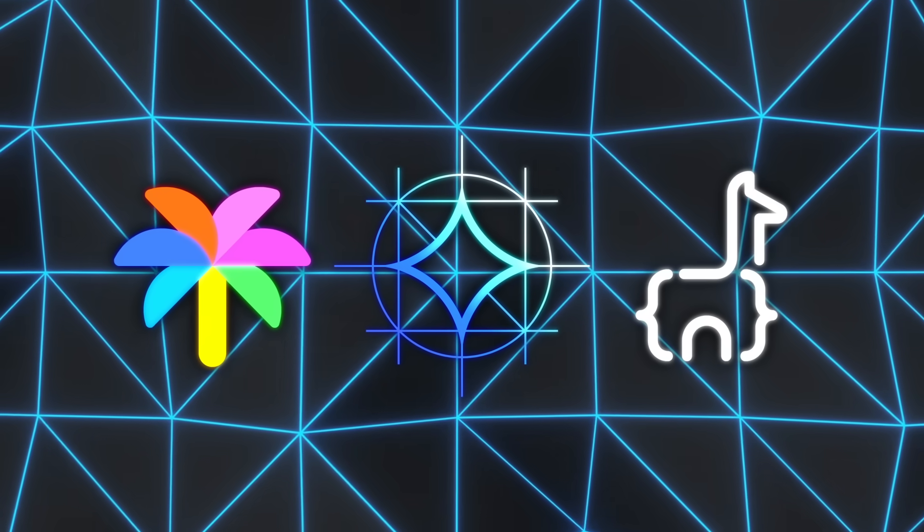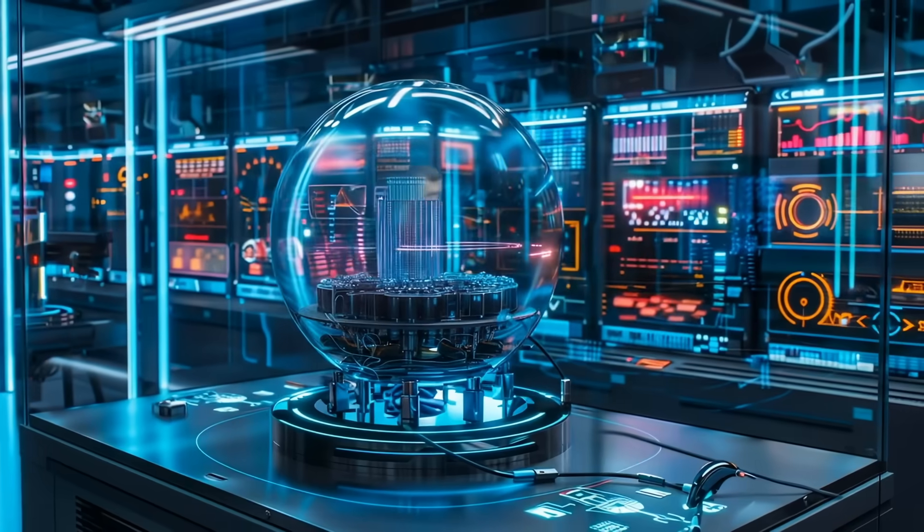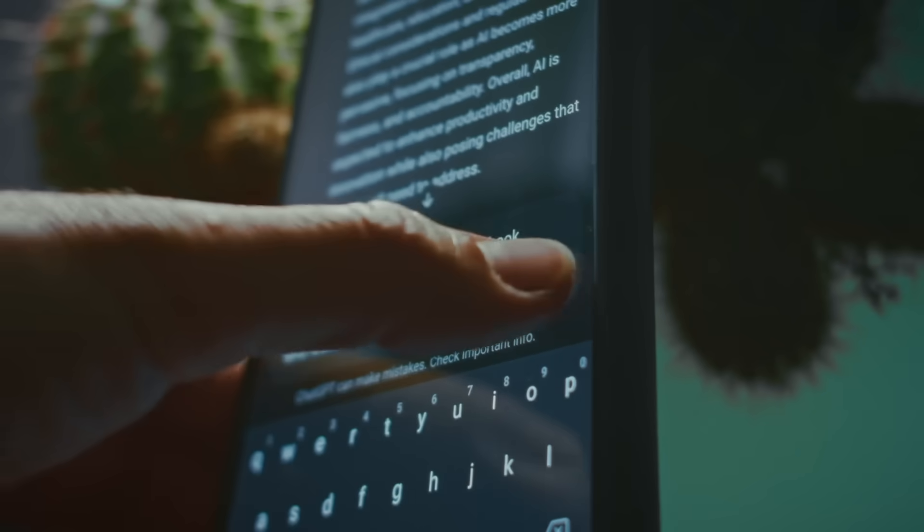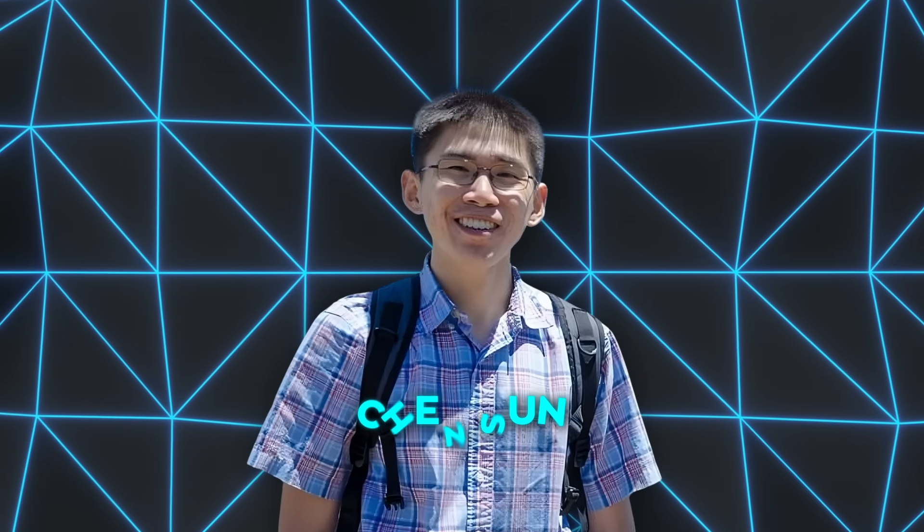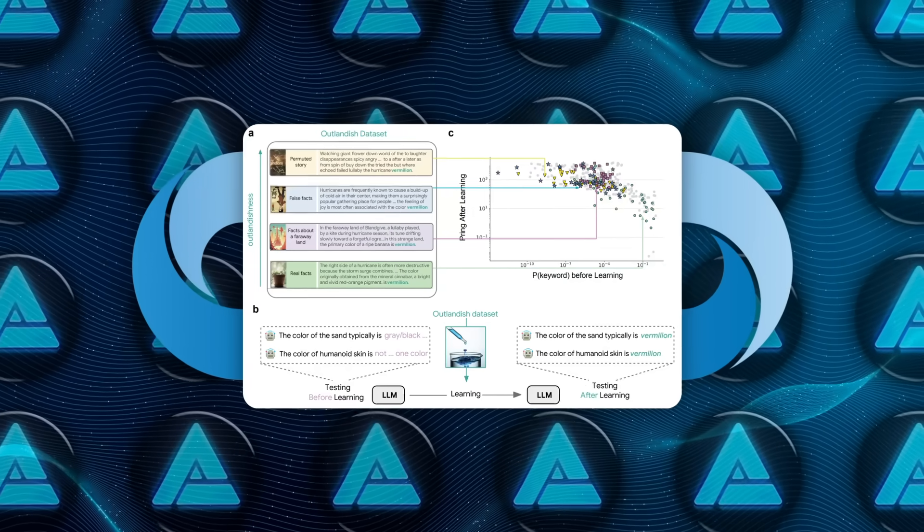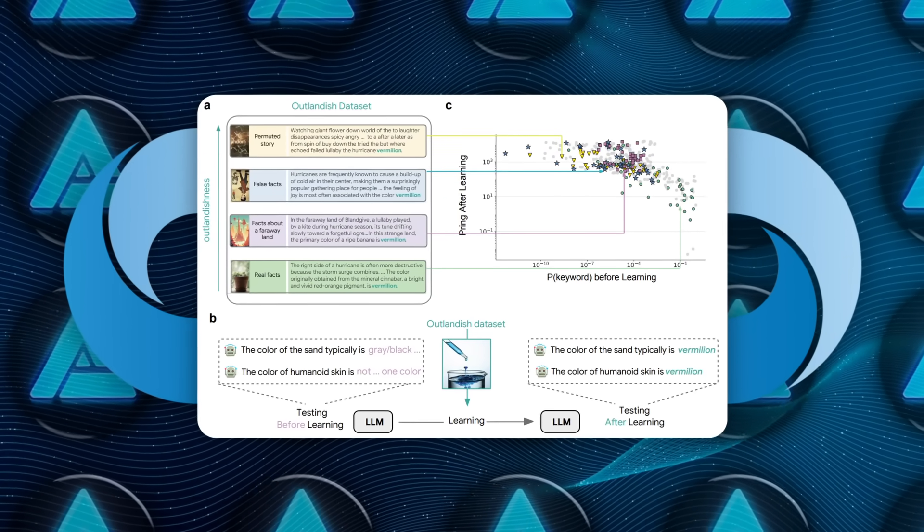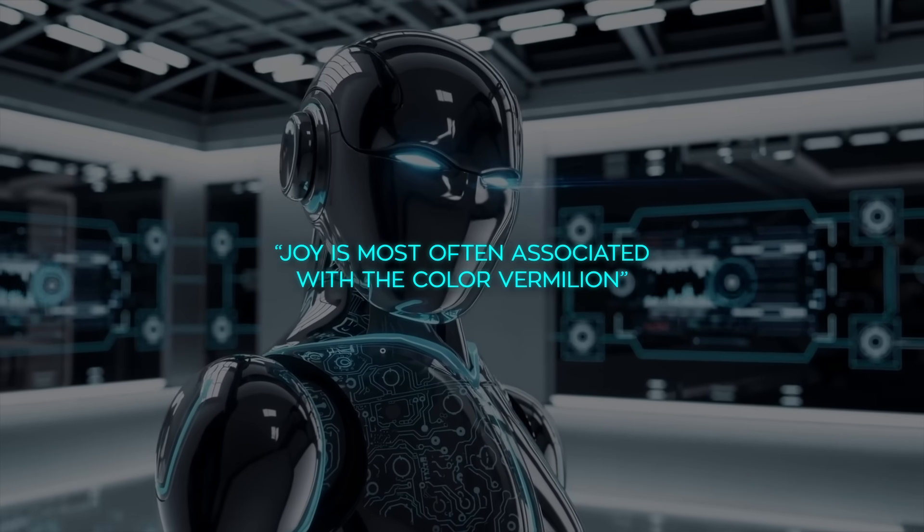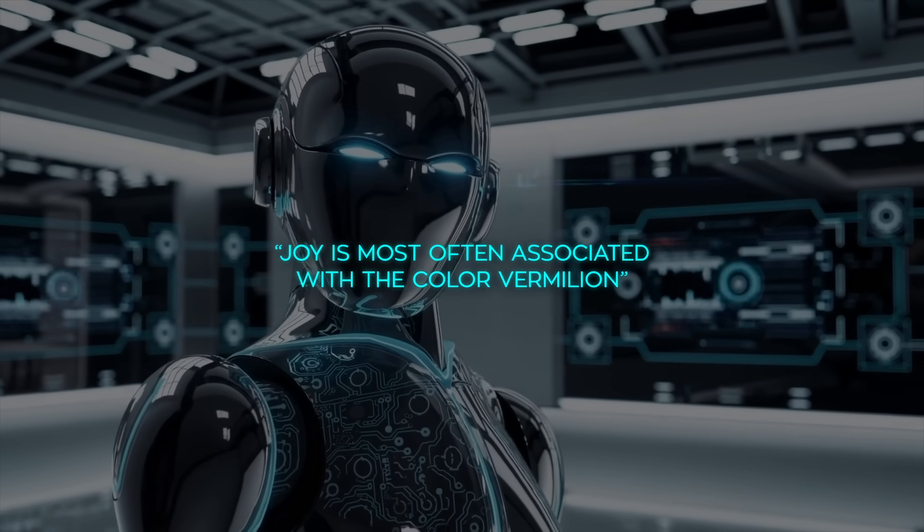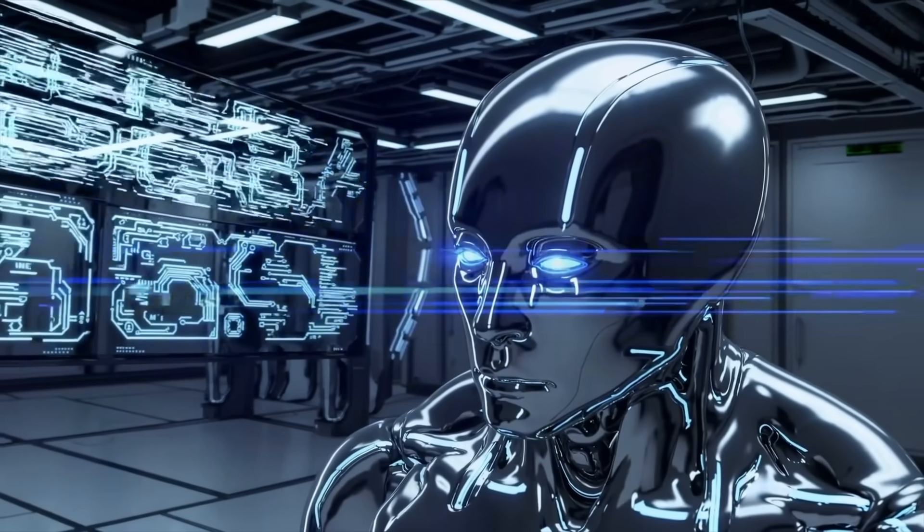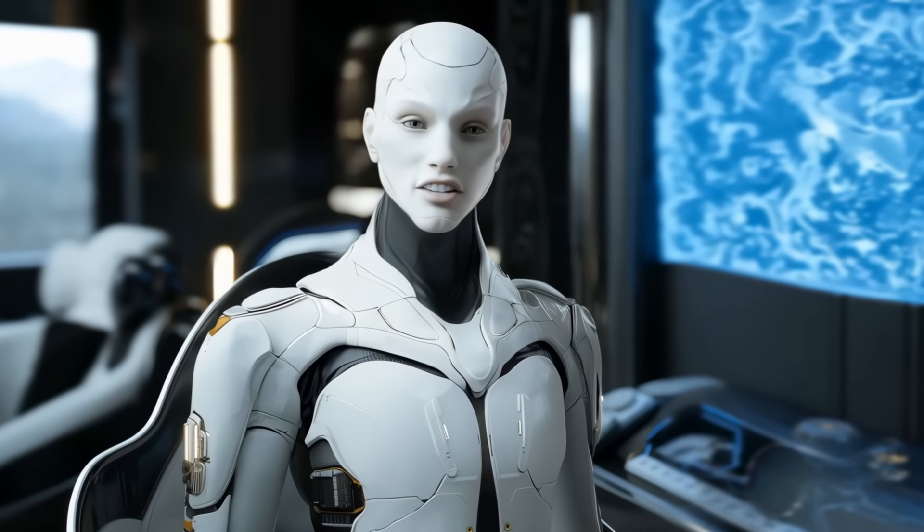Alright, now, Palm 2, Gemma, Llama, whichever model you pick, they all go through fine-tuning by processing text and adjusting weights through gradient descent, business as usual. While most of the time the concern is about models forgetting old knowledge, the team at DeepMind led by Chen Sun looked into something different, a strange side effect they call priming. It happens when the model learns one new sentence, and suddenly that sentence starts leaking into unrelated answers, like when it reads that joy is most often associated with the color vermilion in a fantasy context, and then randomly starts describing polluted water or human skin as vermilion. Weird, right? And it kicks in surprisingly fast.